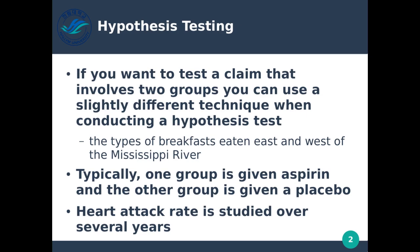Typically, one group is given aspirin and the other group is given a placebo. In clinical studies, whenever we're trying to test whether medicine actually works, we basically give real medicine to one group and a placebo — fake medicine — to another group. We also usually have a third group where we give them no medicine at all. So in studies like this, we would usually have at least real medicine, a placebo, and a group that received no medicine.